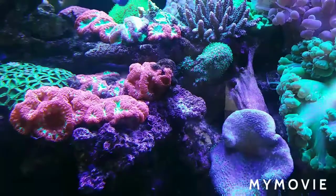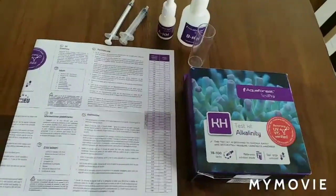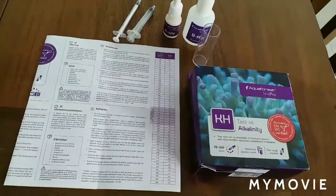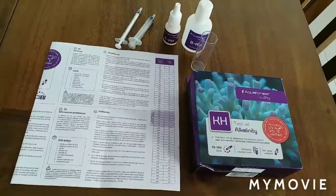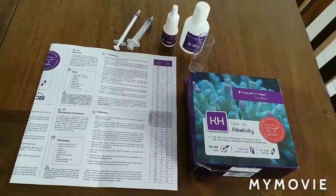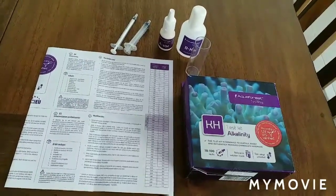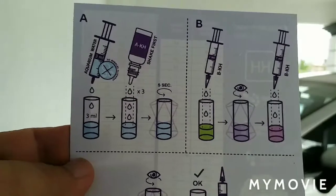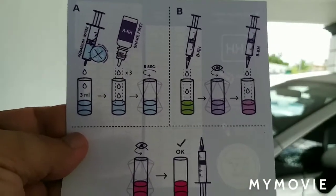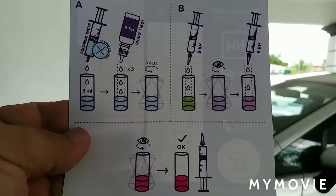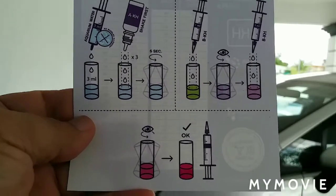Now I will show you how to test your KH. This is the test kit I'm going to use to check the KH in my aquarium. The instruction here is to get 3 ml of water from the aquarium and put it into the test tube.